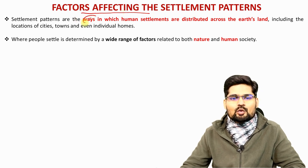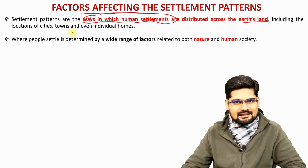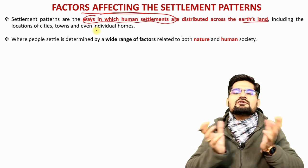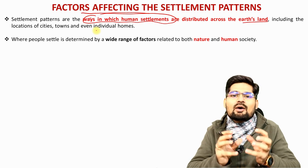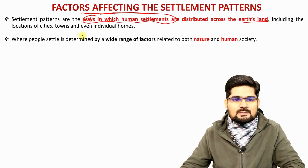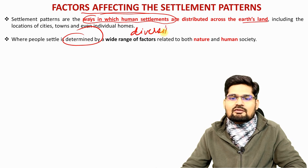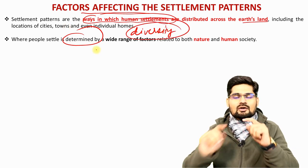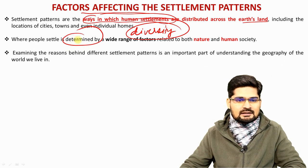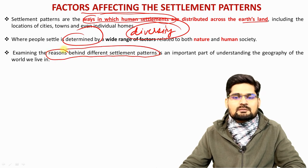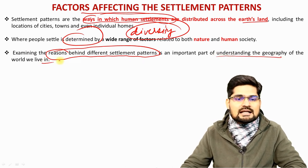Settlement patterns are the ways in which human settlements are distributed across the earth's land. It is important to understand that it's basically talking about the distribution of various settlements across the planet and why they are distributed in that particular way. Where people settle is determined by a wide range of factors — not just natural factors but also some human factors.